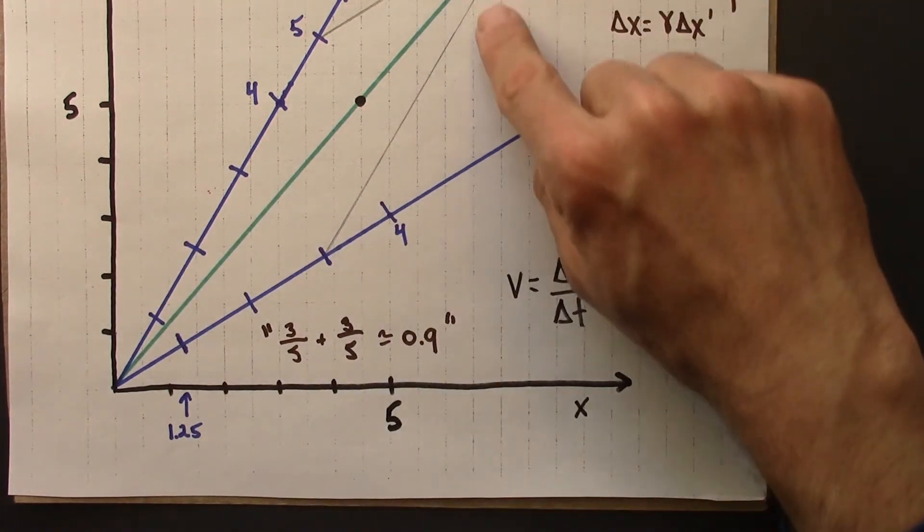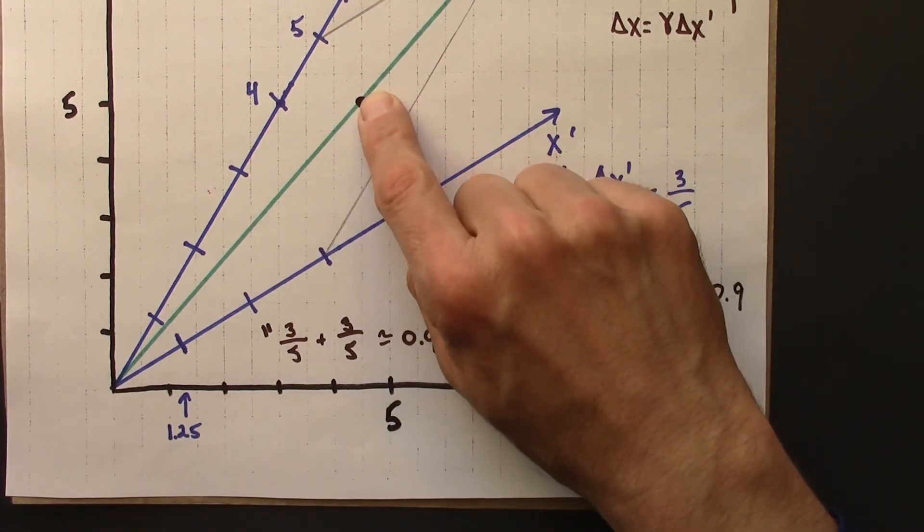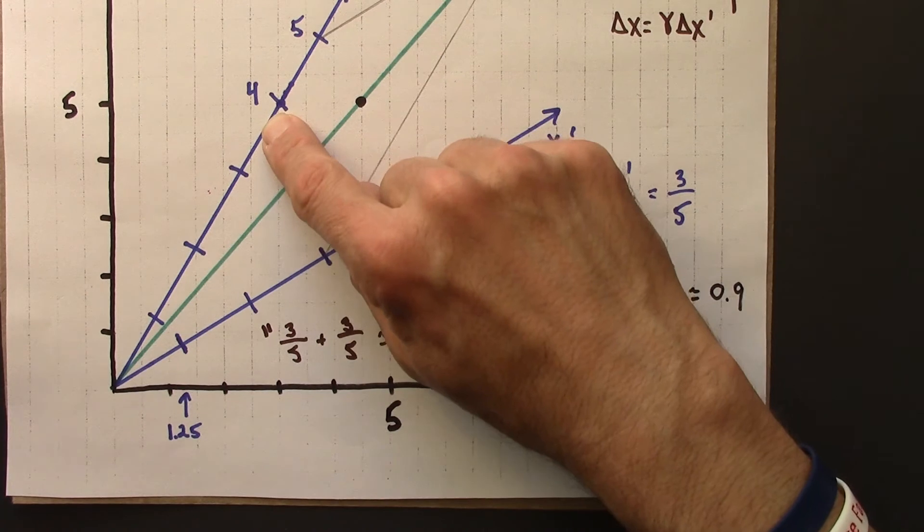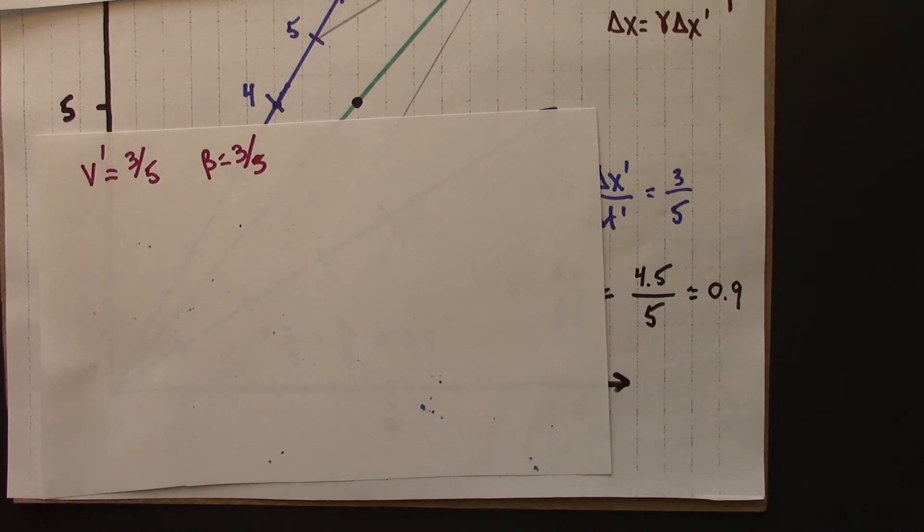The blue frame is moving at a speed of 3 fifths with respect to the black frame. And we figured out that the green object is moving at a speed of 3 fifths with respect to the moving frame. So I've got a 3 fifths for both of these here.